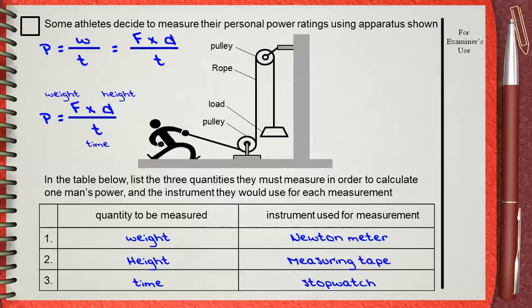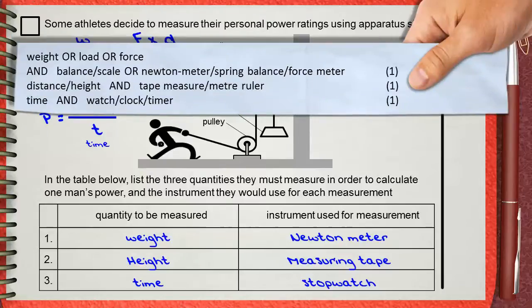Let's see what the mark scheme gives the marks for. Three marks for the question. For the first quantity saying weight or load or force. For the instrument, balance scale, you can say Newton meter or spring balance or force meter. This is one mark.